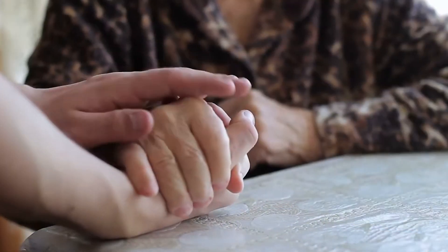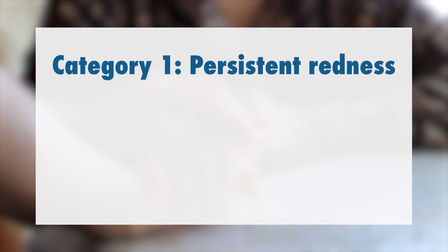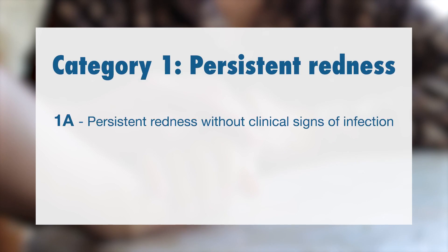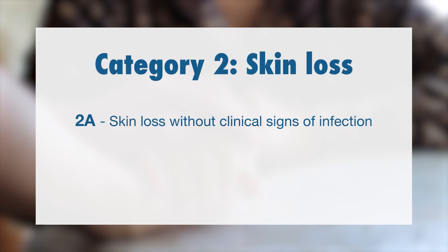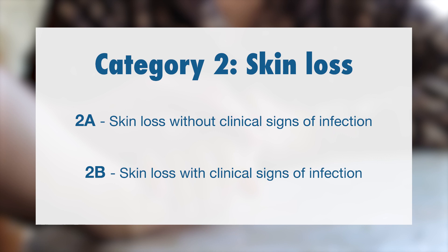We're going in the order of escalating dermatitis. Category 1A is persistent redness without clinical signs of infection. Category 1B is persistent redness with clinical signs of infection. Category 2A is skin loss without clinical signs of infection, and category 2B is skin loss with clinical signs of infection.